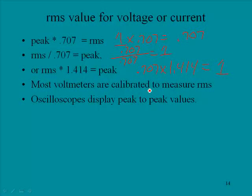Most voltmeters are calibrated to measure in RMS. So when you take a voltmeter, or a VOM, or a digital multimeter, and you measure an AC value, you will measure the RMS value.